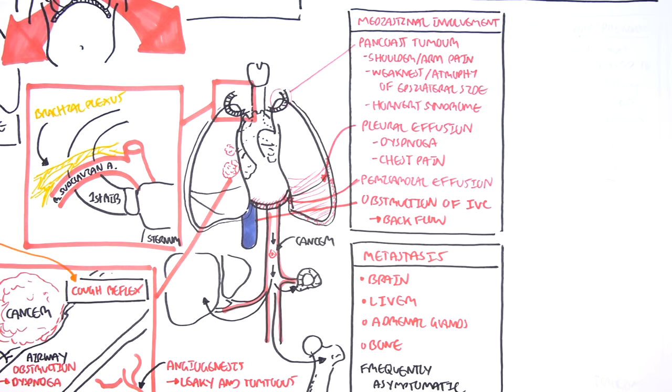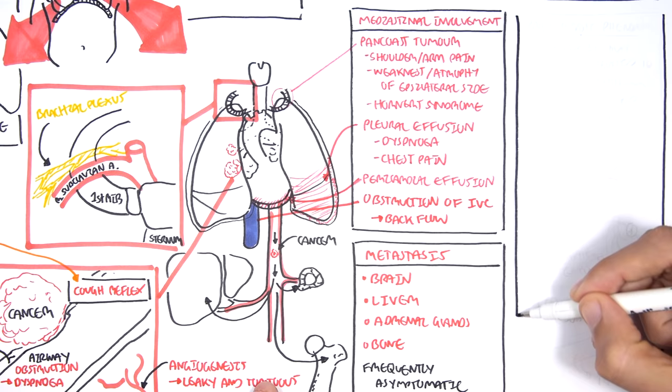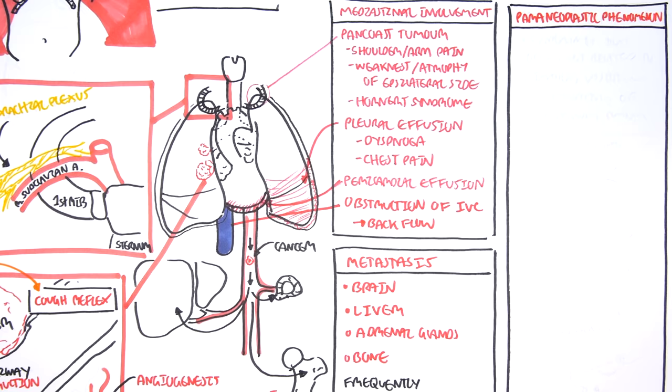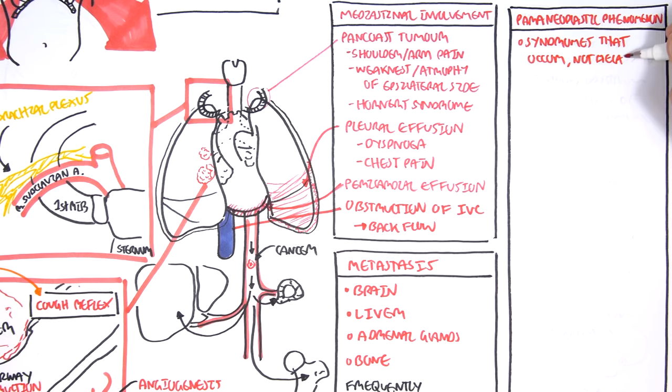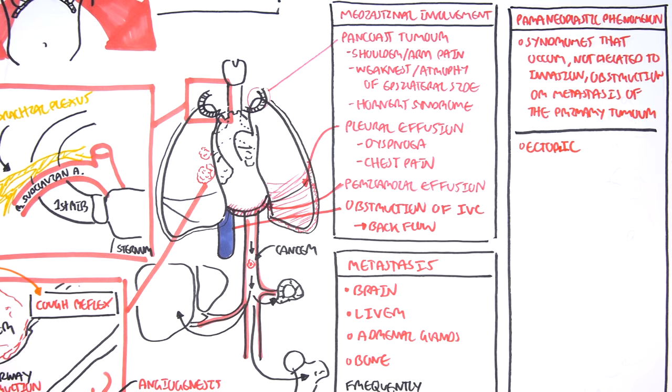Now looking back to the different types of lung cancer, remember the neuroendocrine cells that begin secreting hormones in the small cell carcinoma? It leads to the phenomenon called the paraneoplastic syndrome. Let us learn a bit more about what this encompasses. The paraneoplastic syndrome typically occurs in small cell lung cancer as well as squamous cell carcinomas. Paraneoplastic syndromes are syndromes that occur not related to invasion, obstruction, or metastasis of primary tumor.